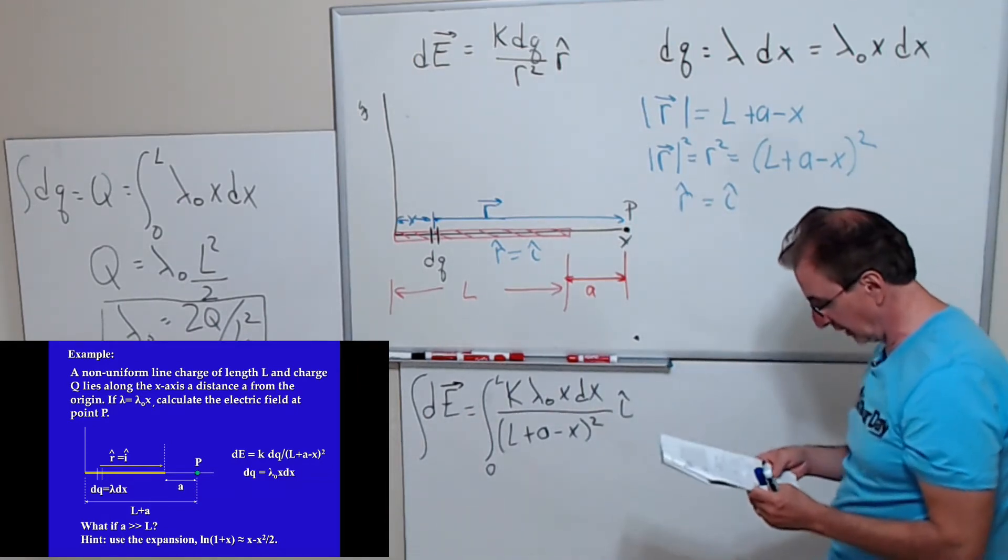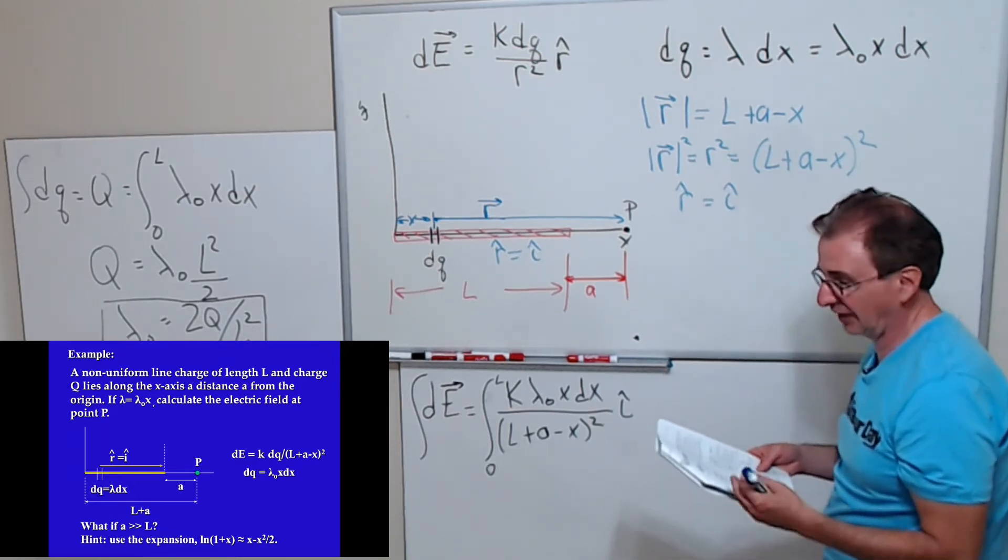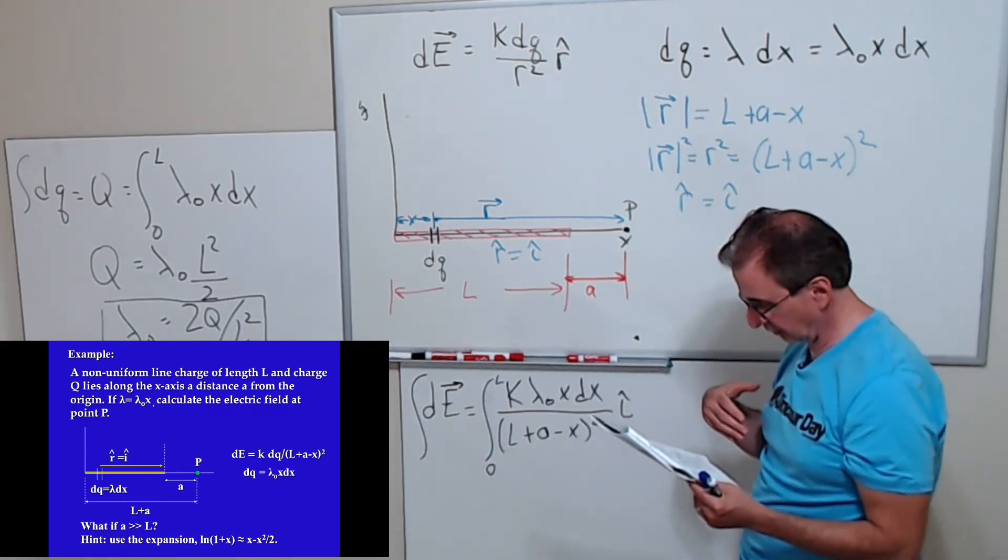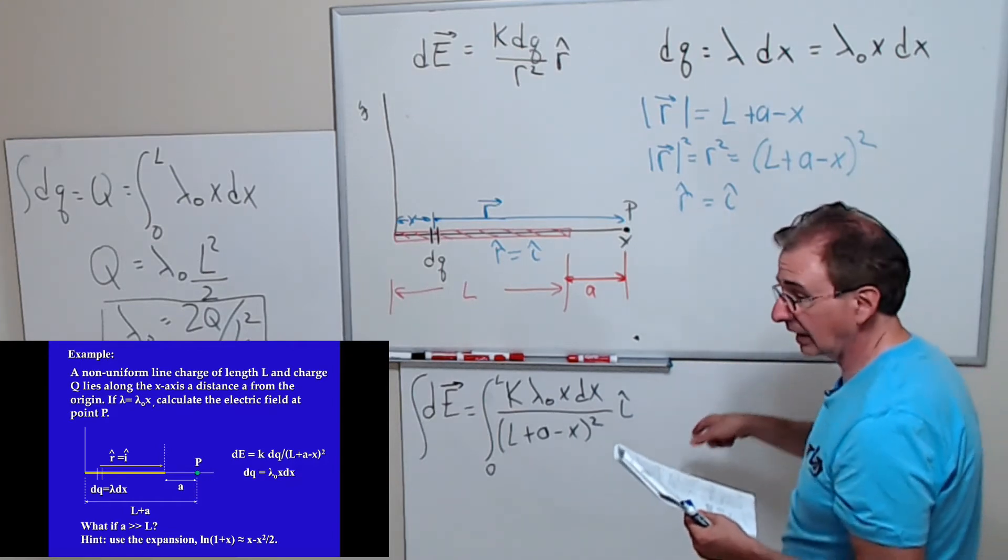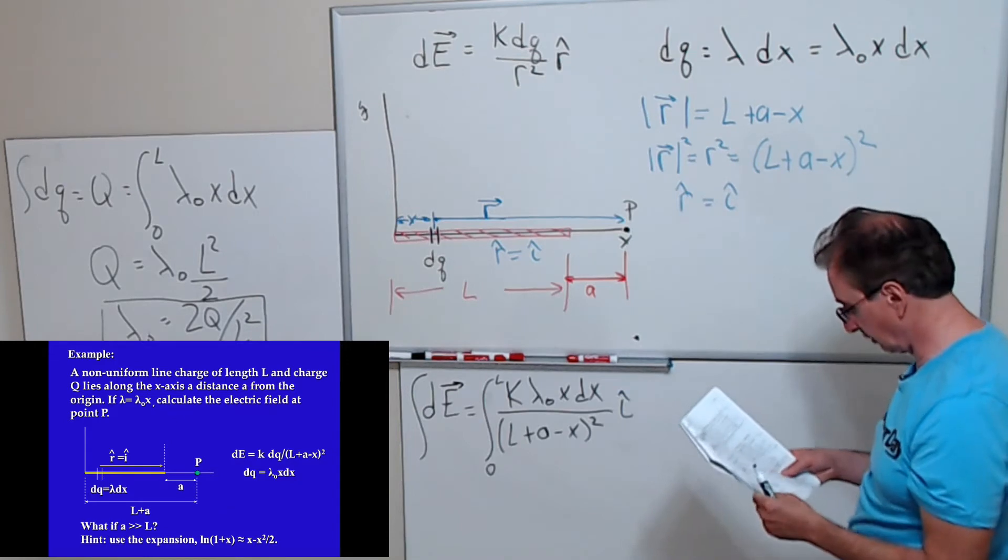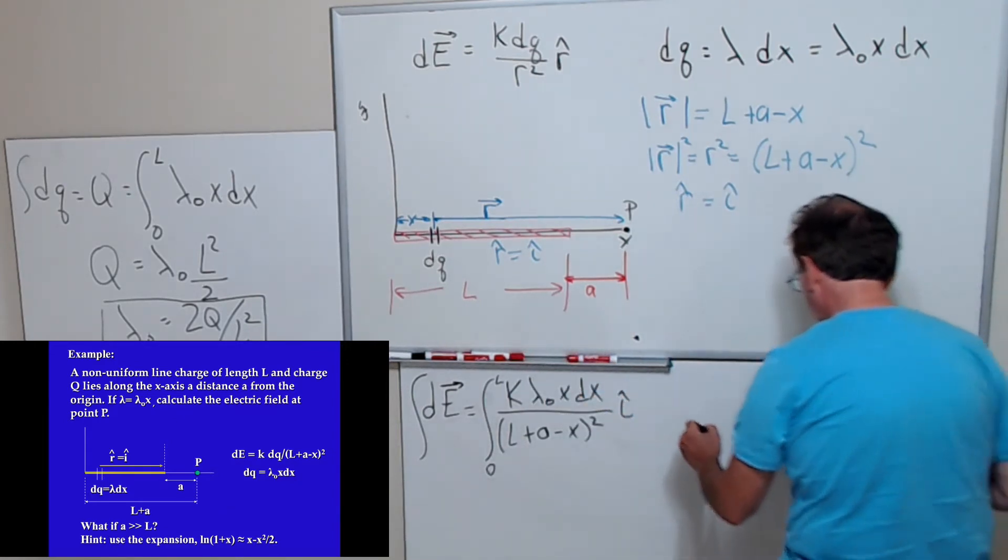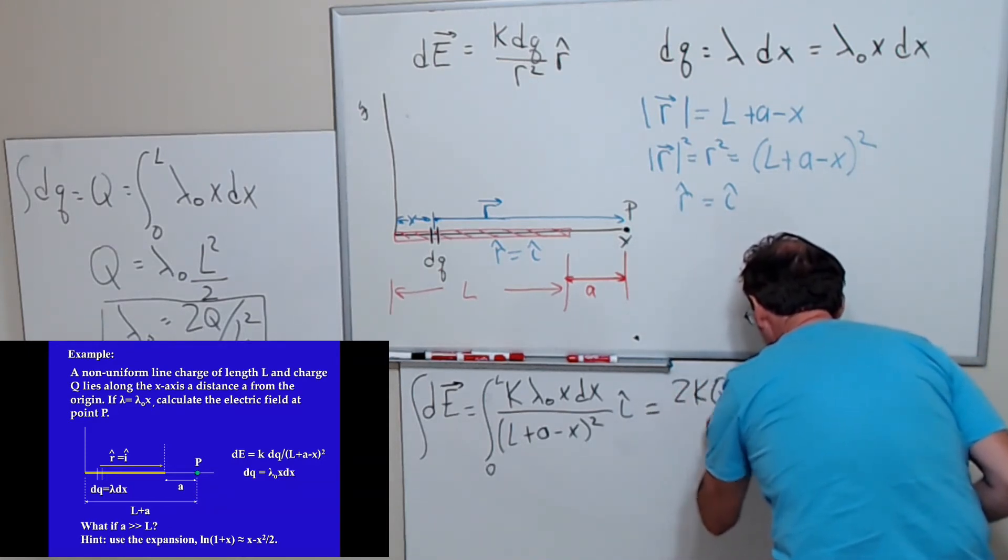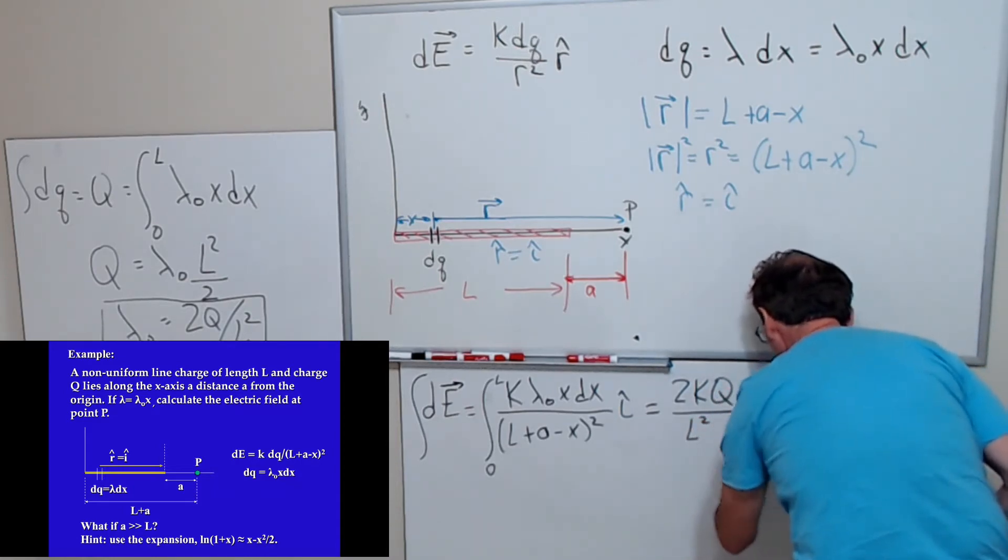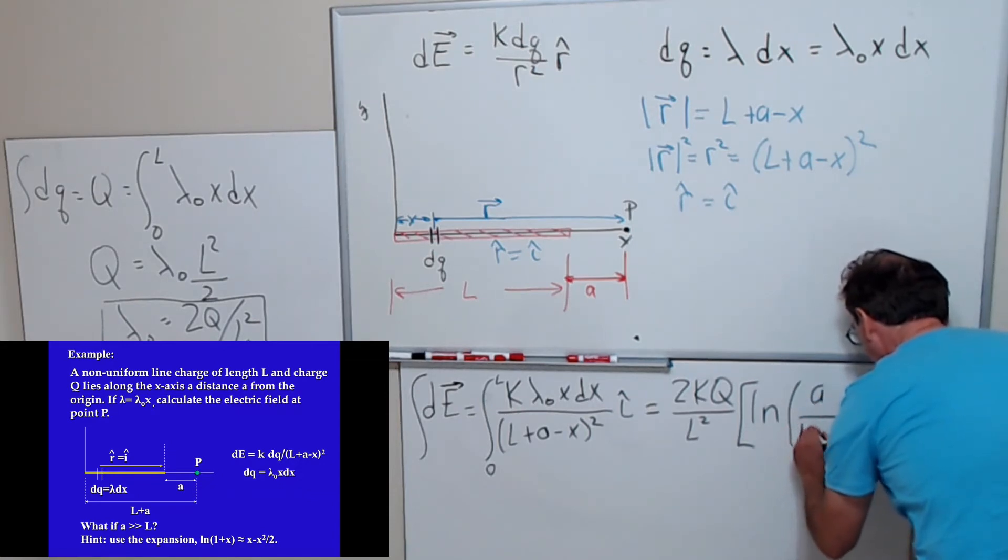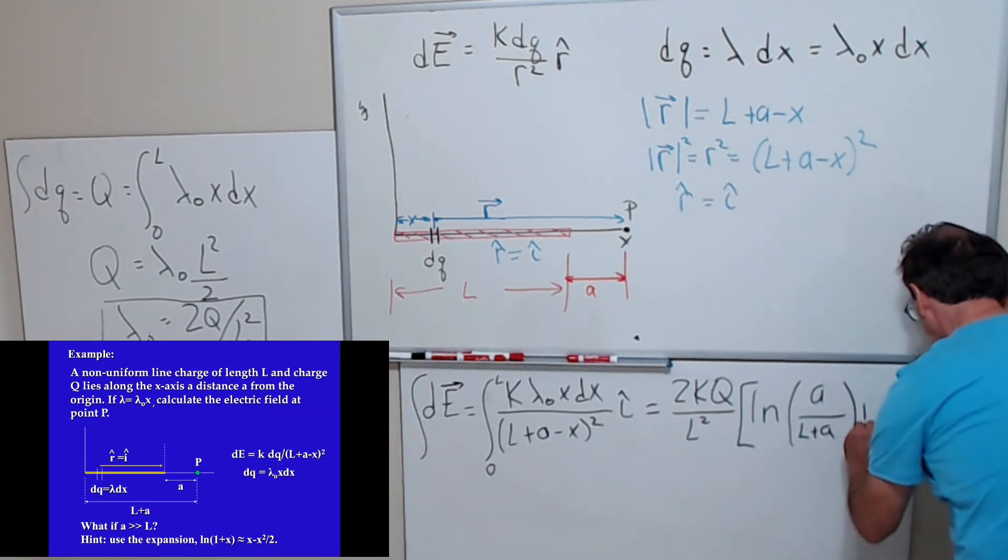Now I'm not going to spend my time here evaluating the integral. You folks can actually do this integral. This is something you will learn how to do in Calculus 2, but I don't want to spend the time doing the integral. So I'm going to write down the actual final answer here. If you perform the integral and you substitute lambda naught, you get the following expression: 2KQ over L squared times the natural log of A over L plus A plus L over A. That's the expression.